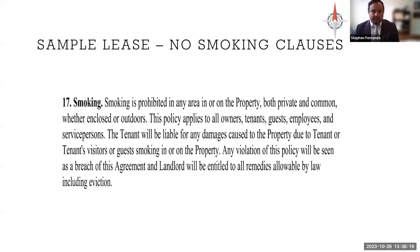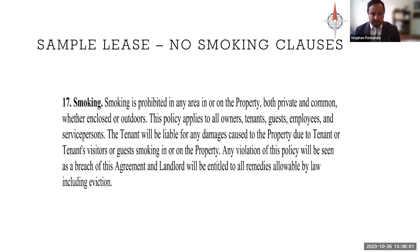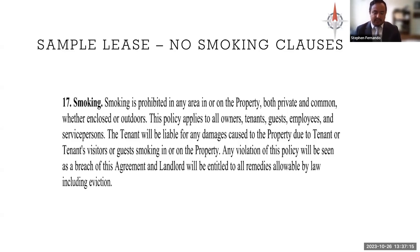When thinking of use and occupancy — things a tenant can and can't do — smoking is a hallmark example. I also think of it in a quiet enjoyment context, because I often get calls from tenants saying their neighbors in the apartment complex are smoking when it's a non-smoking complex. We go to the lease to see if there's a clause labeling it as non-smoking. This is a good example of a no-smoking clause: smoking is prohibited in any area in or on the property, both private and common, whether enclosed or outdoors. The policy applies to all owners, tenants, guests, employees, and service persons. So it's a great no-smoking clause — the situation of neighbors smoking would be avoided in theory, or there would be remedies, and even the owners can't smoke on the property.